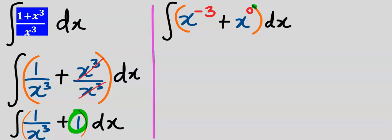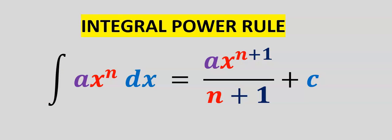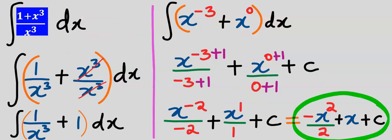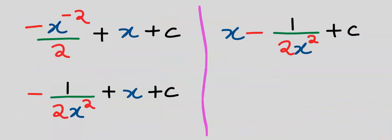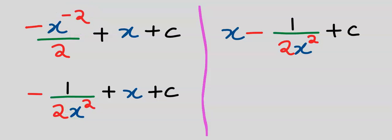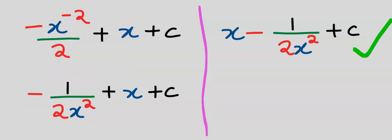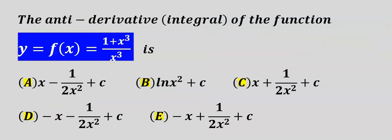Remember that 1 is the same thing as x to the power of 0. We apply the integral power rule, and when solved correctly this is our answer. According to the law of indices, when x comes down it loses its negative power. Because of the presence of this negative we can move it, and this becomes our result. From the options our answer is A.